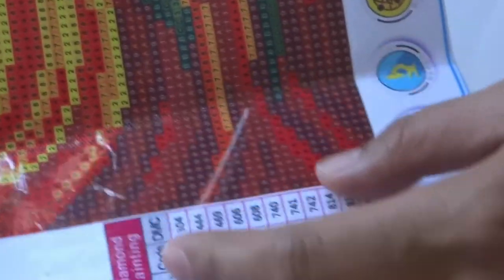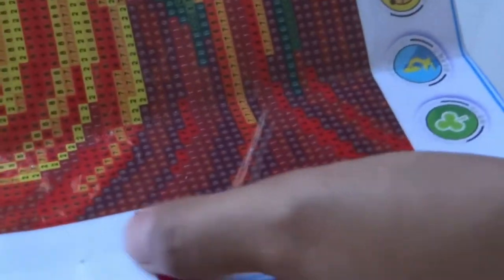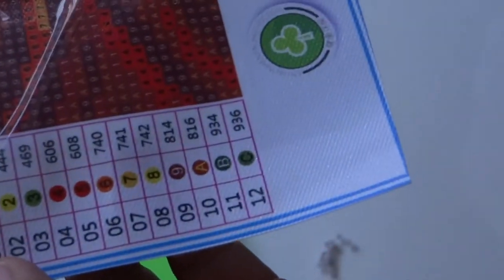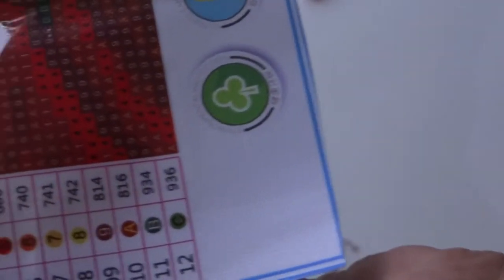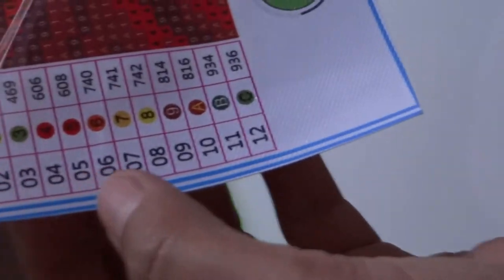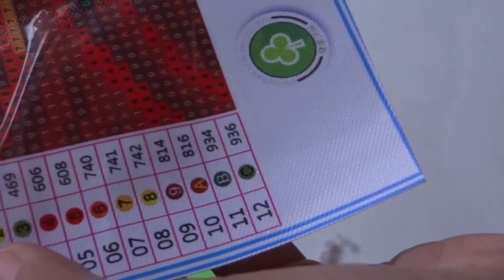How can you tell how many colors are in a diamond art project? The trick is right here. You can see here in the lower left side of the canvas you have the numbers from 1 to 12 and also the code.